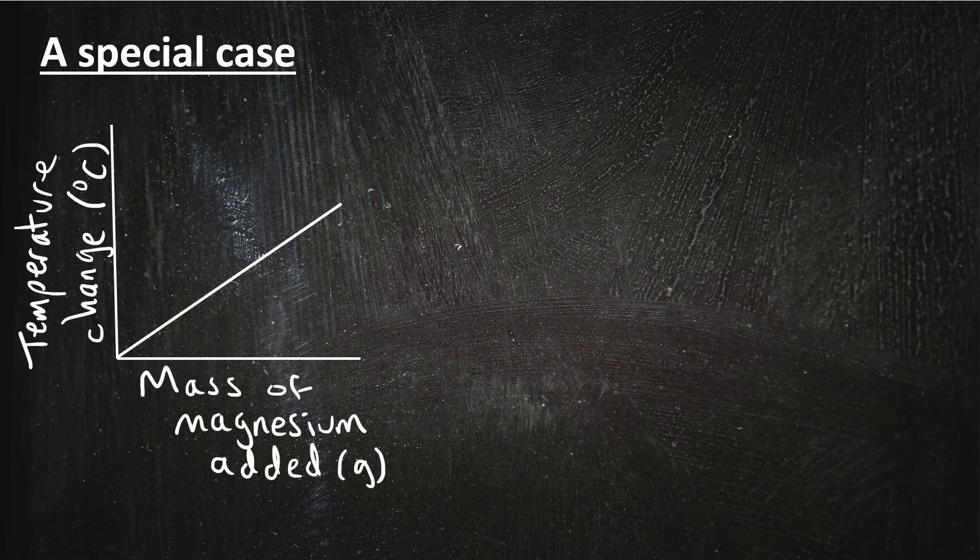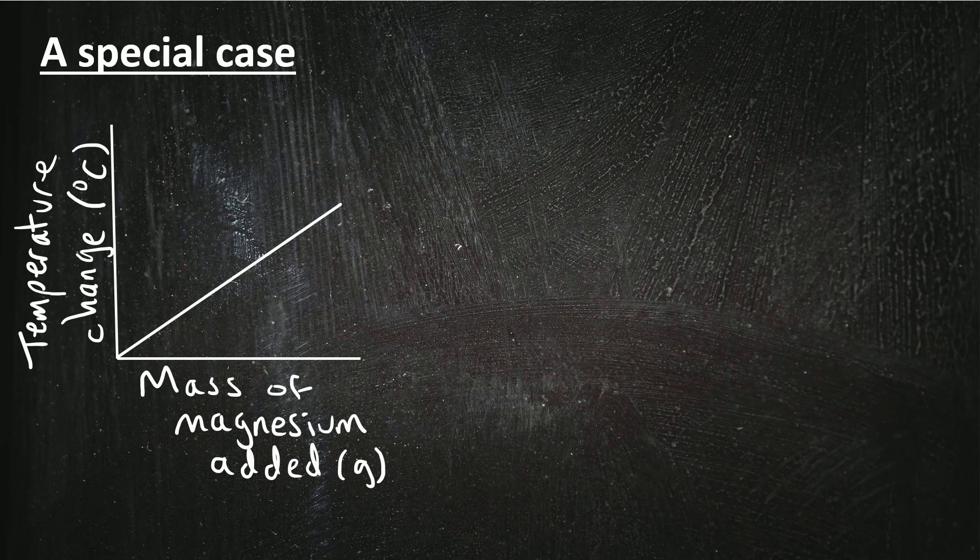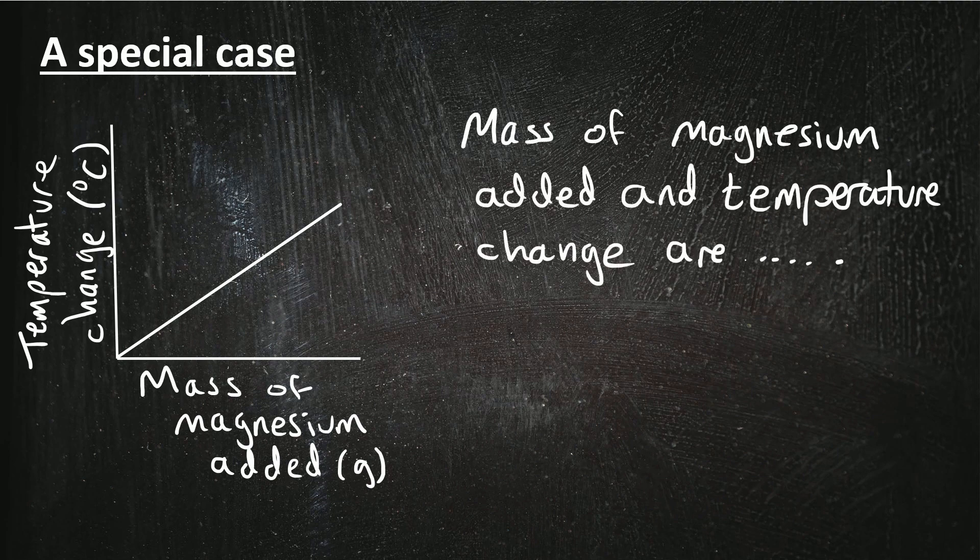At this point I am going to mention a special case, and that's when we have a straight line graph that passes through the origin where the x and y axis meet. And in this case it's a graph of the mass of magnesium added and the temperature change from the reaction. So in this case, because it is a straight line and it is going through the origin, we can say the mass of magnesium added and temperature change are directly proportional.